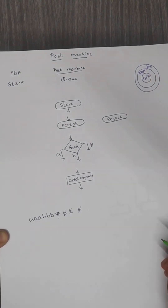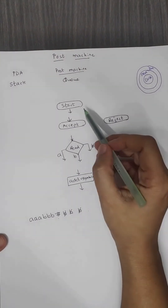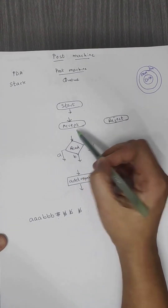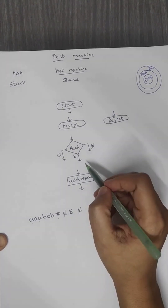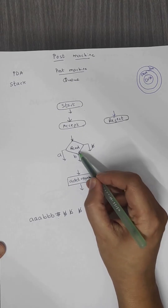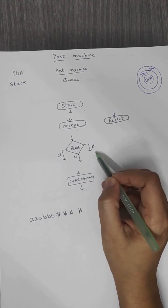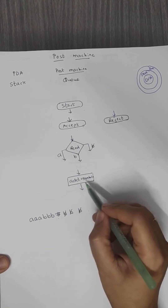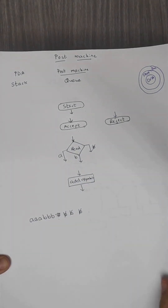The symbols we use in the case of Post Machine are: a start symbol to start the machine, an accept state as the final state, a reject state, and a decision box called the read state. On reading, you can read 'a', 'b', or blank depending upon the input tape symbols. If you want to add something onto the queue, we use 'add' followed by the symbol name. These are the basic symbols used in designing the Post Machine.